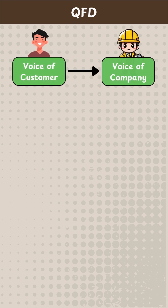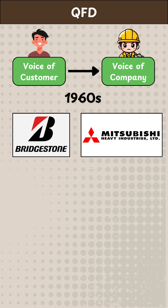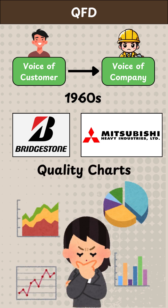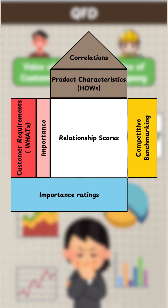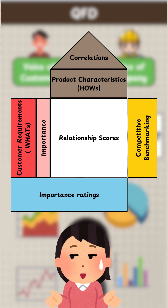How will a production engineer know what to work on? That's where QFD comes in — a methodology that translates customer needs into specific operational requirements. QFD was originated in the late 1960s at Bridgestone Tires and Mitsubishi Heavy Industries, where they used quality charts to include customer requirements in their product design processes.